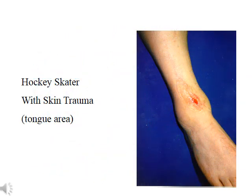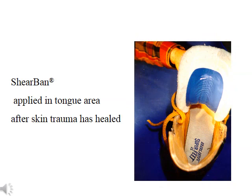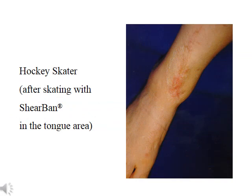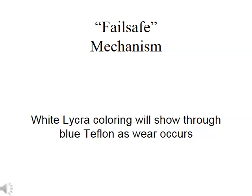In this clinical example, Tamarac had a hockey player with a tissue graft from a compound fracture. This gentleman could not play a full game of hockey without creating an abrasion injury on the graft site. An applique of Sheerban was applied to the inner surface of the tongue of the ice skate. The result was the ability of this hockey player to play a full game of hockey without subjecting his skin to tissue trauma. The only difference was the reduction of peak friction forces that occurred between the skate and his foot; the level of pressure did not change.